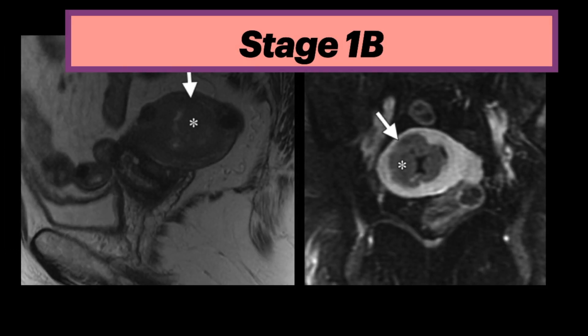The axial oblique dynamic contrast-enhanced MRI, obtained 4 minutes after IV injection of contrast, shows the arrow pointing at the hypoenhancing tumor relative to the hyperenhancing myometrium. This is an example of stage 1b endometrial cancer. The sagittal T2 shows a large iso- to hypointense endometrial tumor with poor tumor-to-myometrium contrast, and the contrast-enhanced axial oblique image shows tumor enhancement with invasion of the outer half of the myometrium.